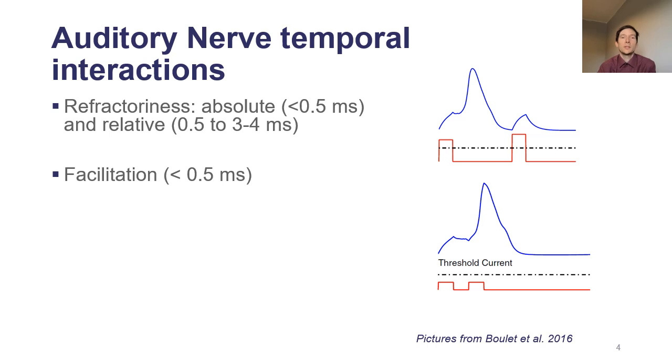There is also facilitation, that is when you have two sub-threshold pulses, if you present them within a short window it can make the neuron spike. And there is also accommodation and spike rate adaptation, but I won't touch much on them because they are not the most impactful here.